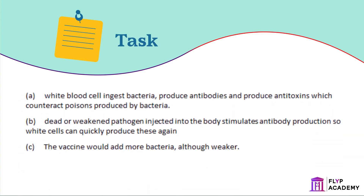And here are the answers. A. White blood cells ingest bacteria, produce antibodies and antitoxins which counteract poisons produced by bacteria. B. Dead or weakened pathogen injected into the body stimulates antibody production, so white cells can quickly produce these again. C. The vaccine would add more bacteria, although weaker.